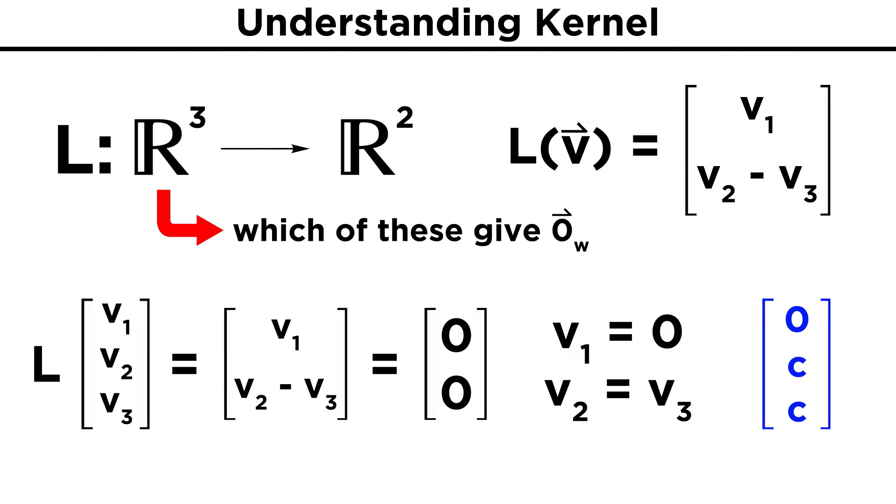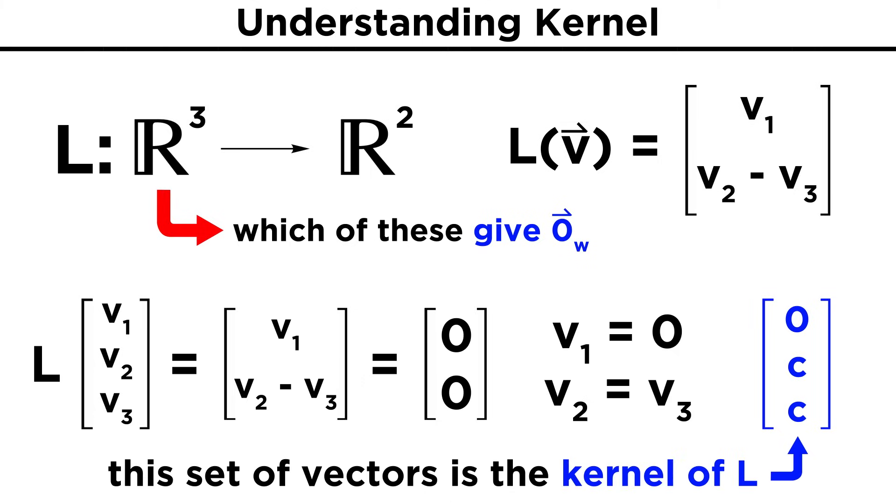This means that any vector from ℝ³ of the form zero, C, C, where the first element is zero and the second and third are equal to one another, will give the zero vector in W when transformed. The set of vectors of this form is our kernel.